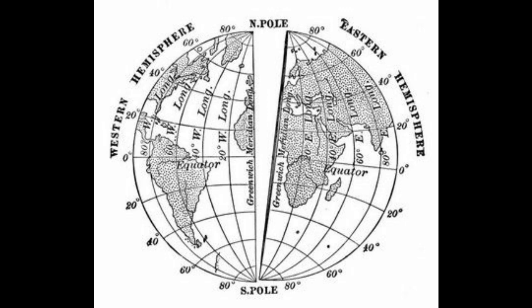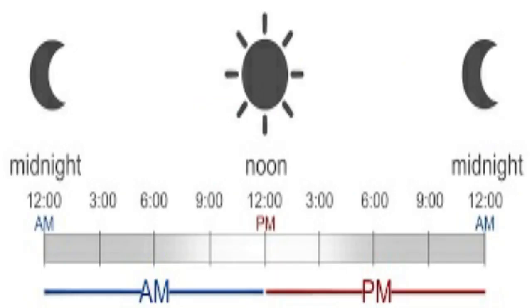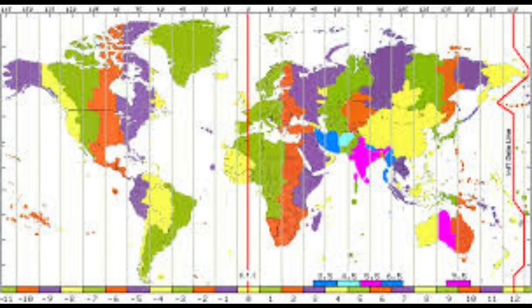Regarding local time: if the time is 12 noon at the Greenwich meridian, it is 12:04 PM at one degree east longitude, and 11:56 AM at one degree west longitude. AM means ante meridian — before noon — and PM means post meridian — after noon.